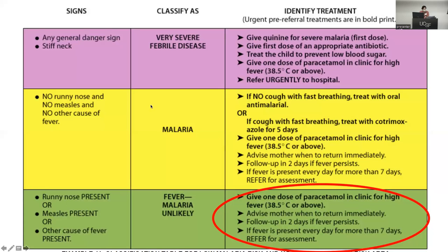The guidelines get into a chart for managing febrile patients. If they have danger signs or a stiff neck — severe febrile illness — you treat for malaria, give an antibiotic, basically treat for sepsis and refer. If they have malaria but look okay, you treat and follow up. If they have symptoms of pneumonia, give antibiotics and have them return. The bottom group is 'we don't know — come back, give them paracetamol,' which is like presuming a viral illness, but in this setting it's a lot trickier.